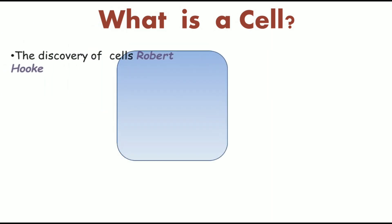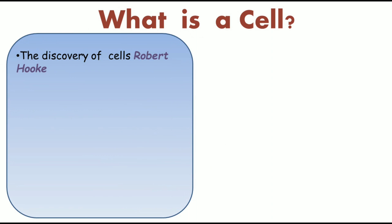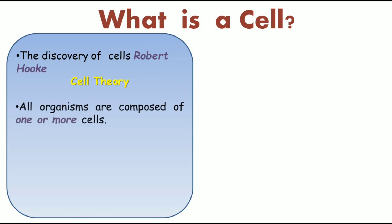Cell was first discovered by Robert Hooke. Later, cell theory came. This theory explains what characteristics should be present within a cell that makes it a cell. All organisms are composed of one or more cells. A multicellular organism may consist of millions of cells, as explained in the cell theory.